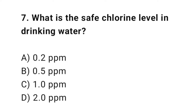Question number seven: what is the safe chlorine level in drinking water? The right answer is B — 0.5 ppm. 0.5 ppm of residual chlorine keeps water safe.